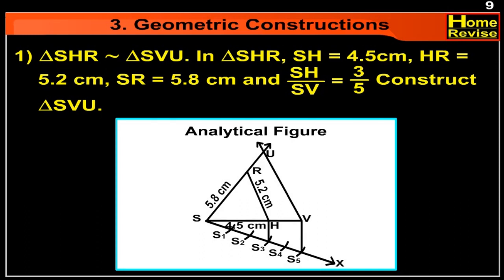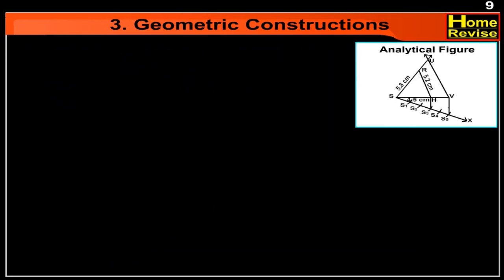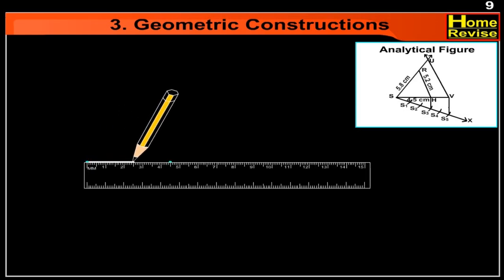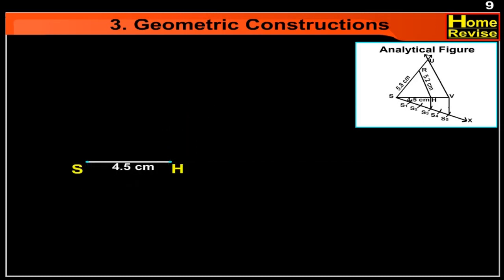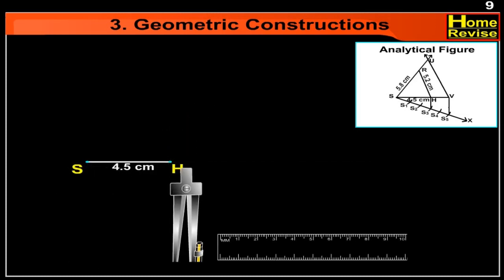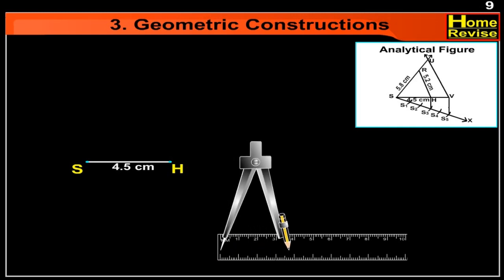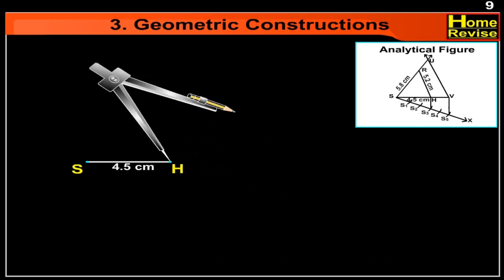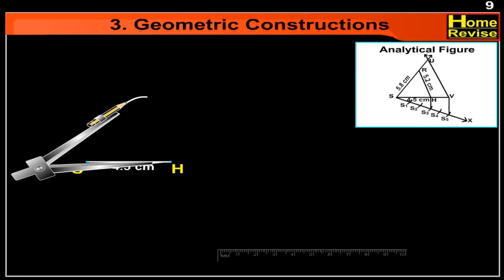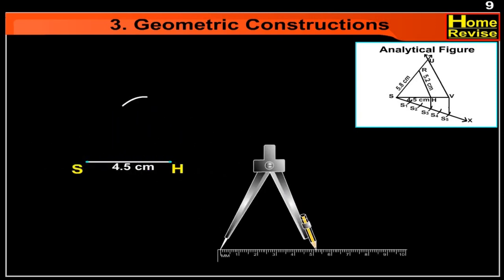First, let us draw triangle SHR. SH is equal to 4.5 cm, HR is equal to 5.2 cm, and SR is equal to 5.8 cm.